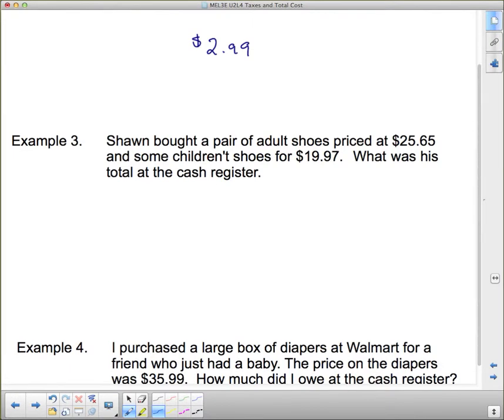Example 3. Sean bought a pair of adult shoes priced at $25.65 and some children's shoes for $19.97. What was his total at the cash register? Well, there's tax on this but there's not as much tax on this. This is subject to the 13% and this is only subject to 5%. So we're going to make this in two different calculations and then add them together.